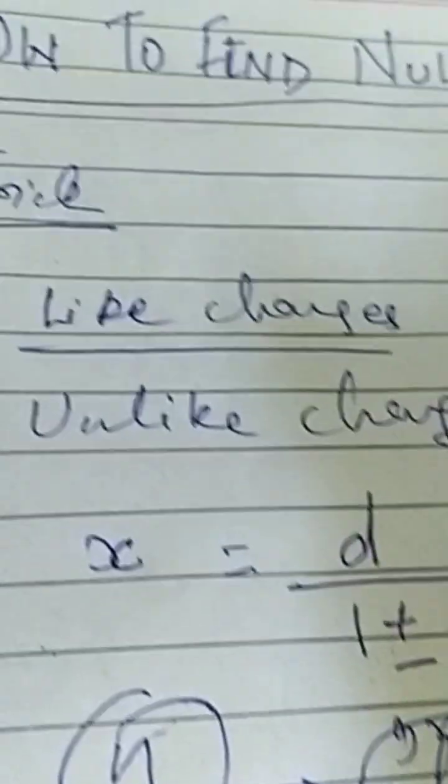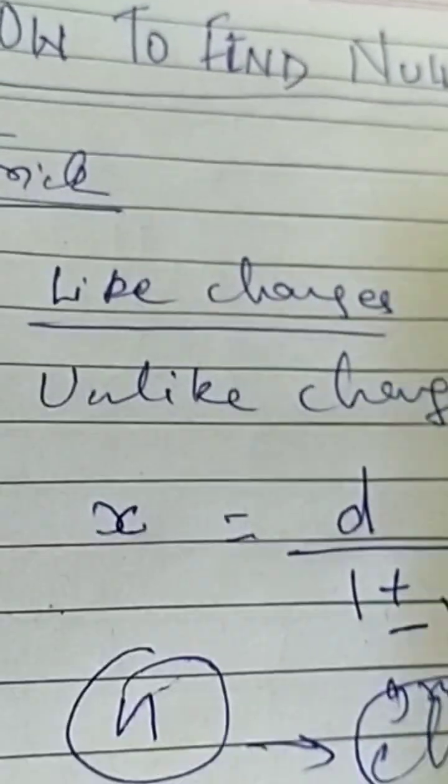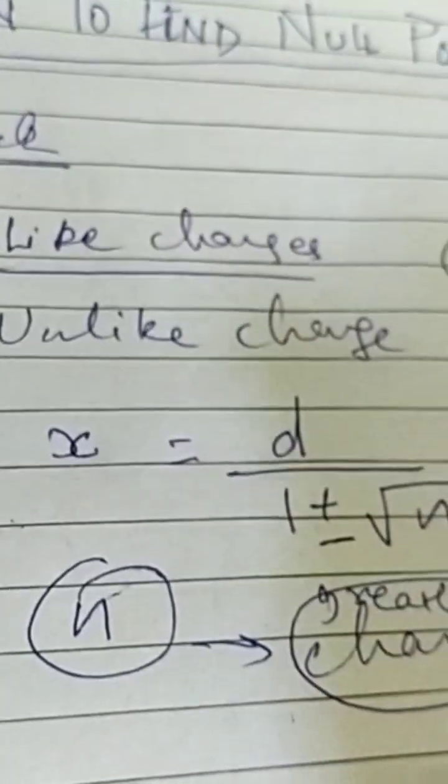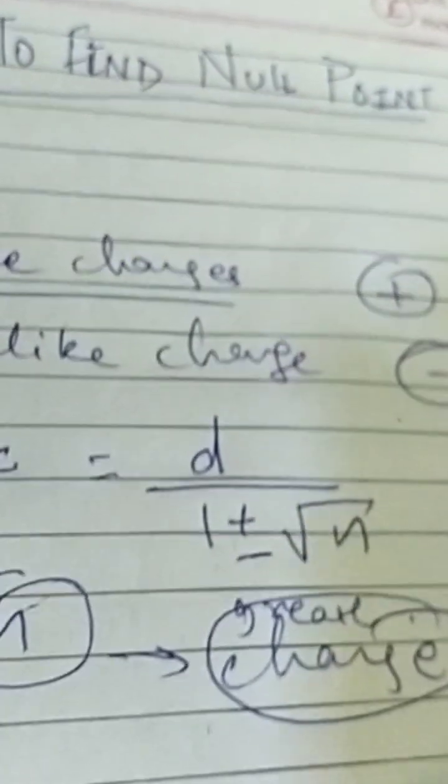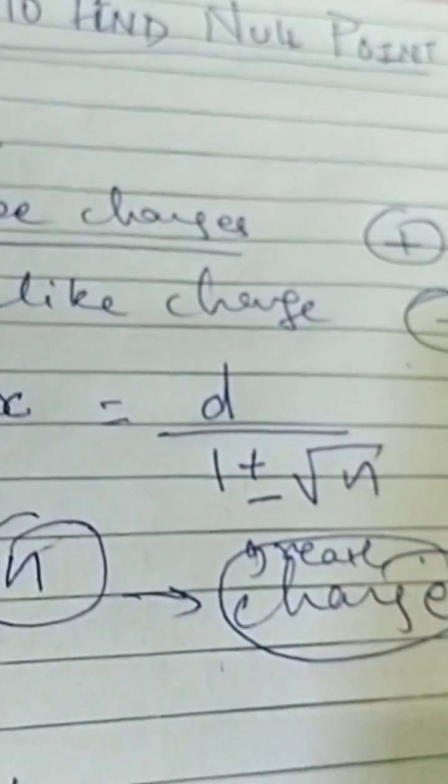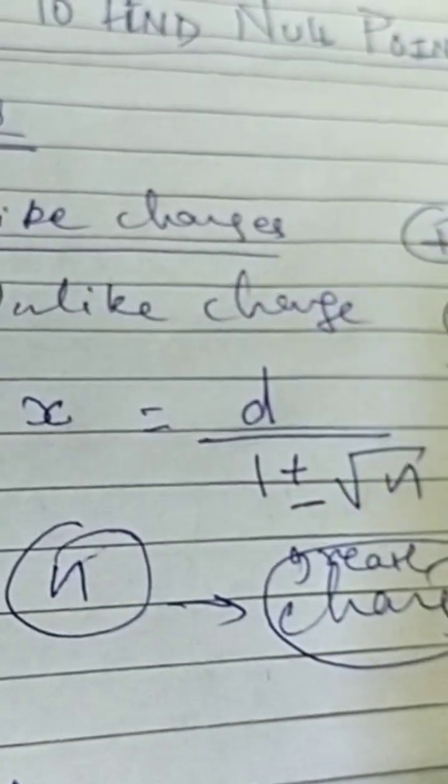So as you can see this is like charge. So null point must be between the charges. Null point for like charges, write this, between charges. Or here outside smaller charges or smaller outside, here also it is applicable.